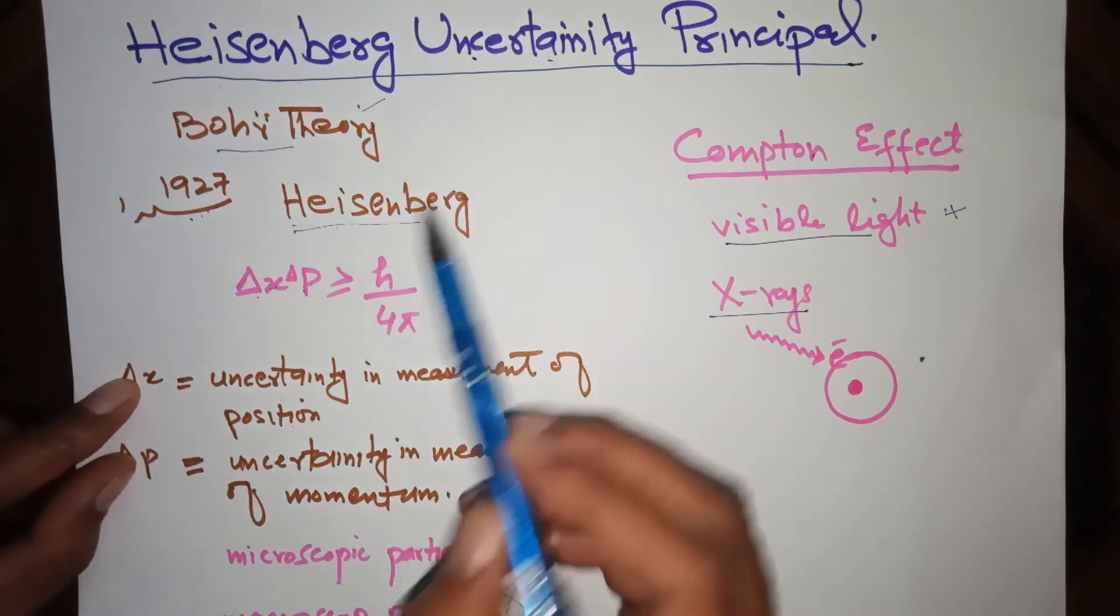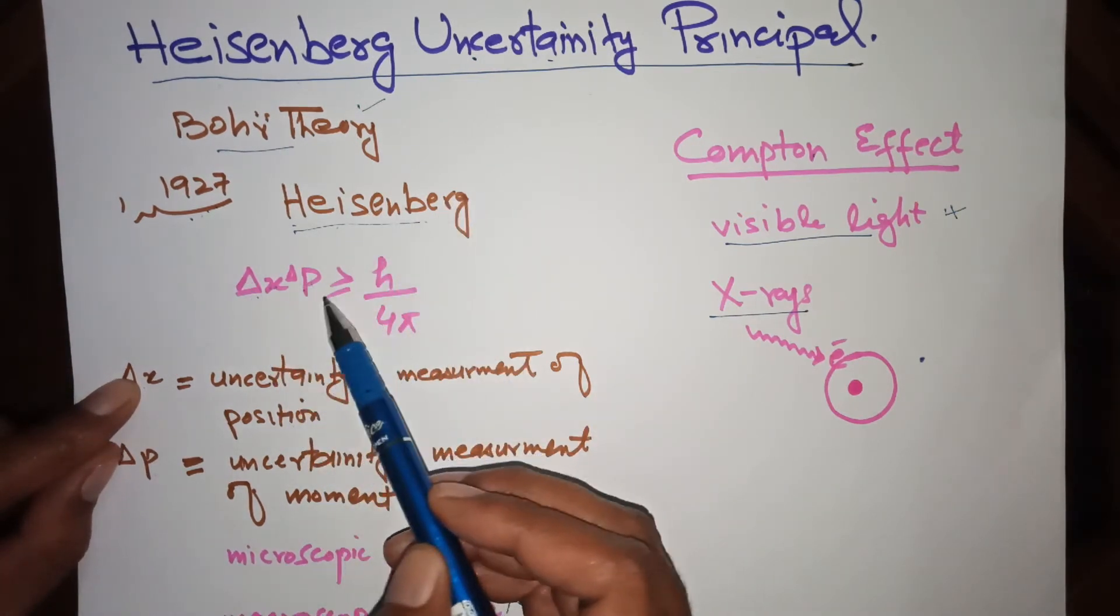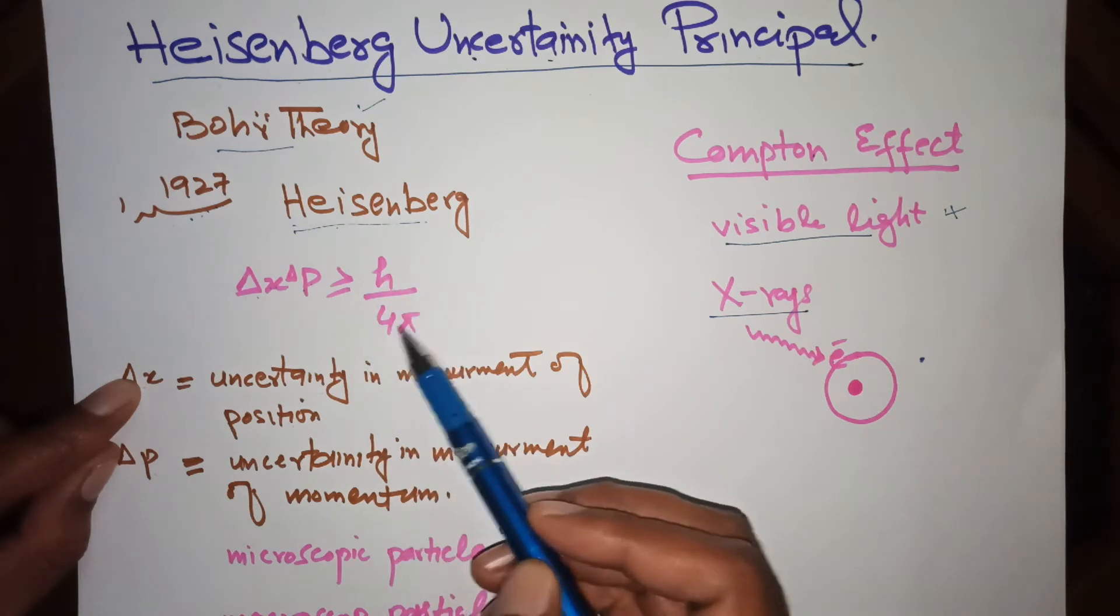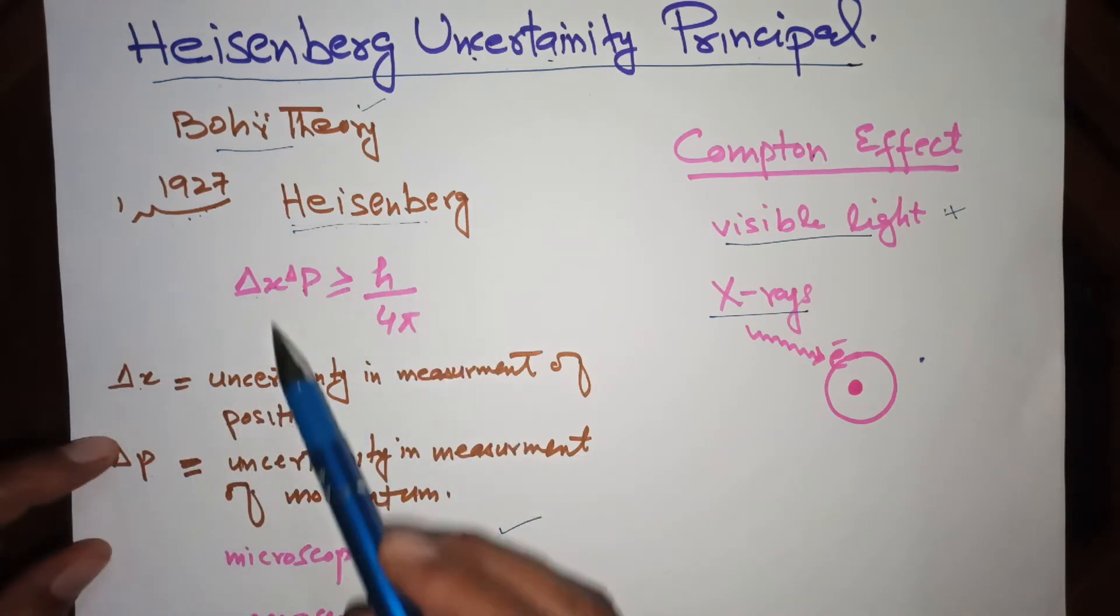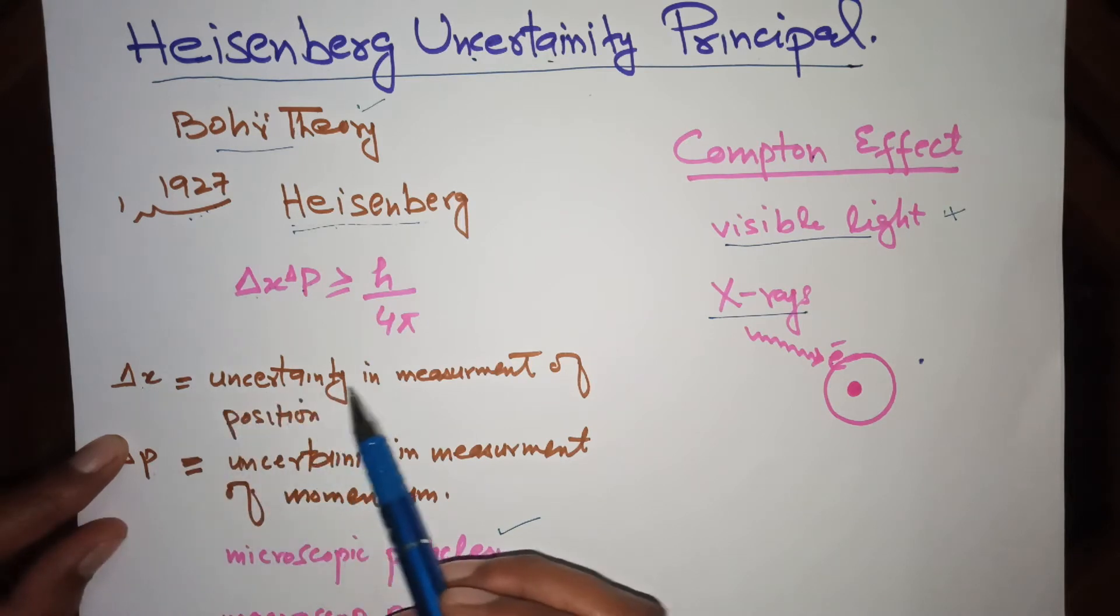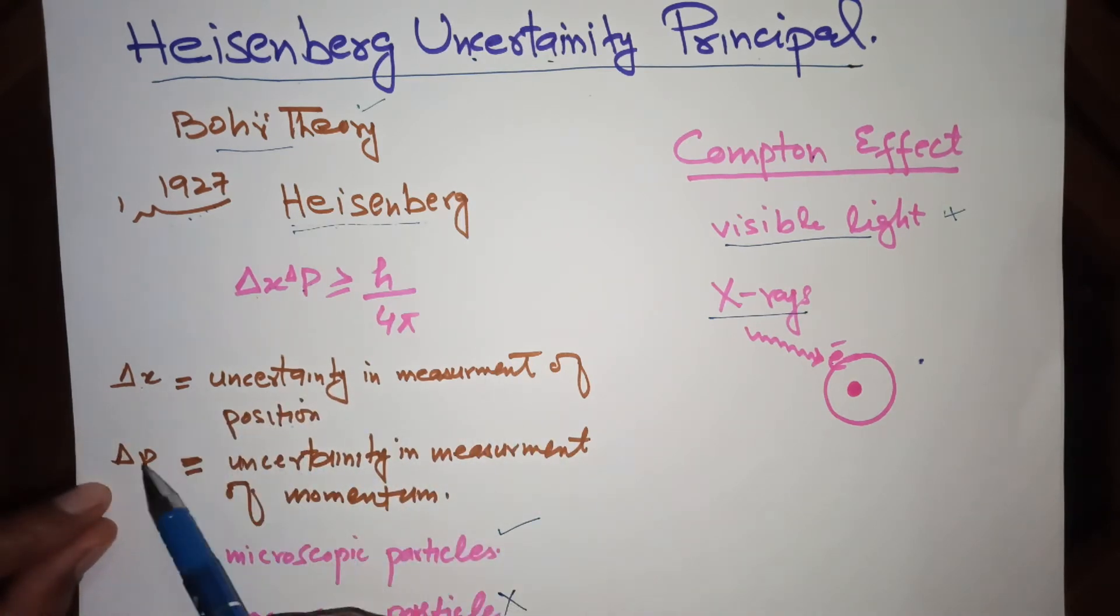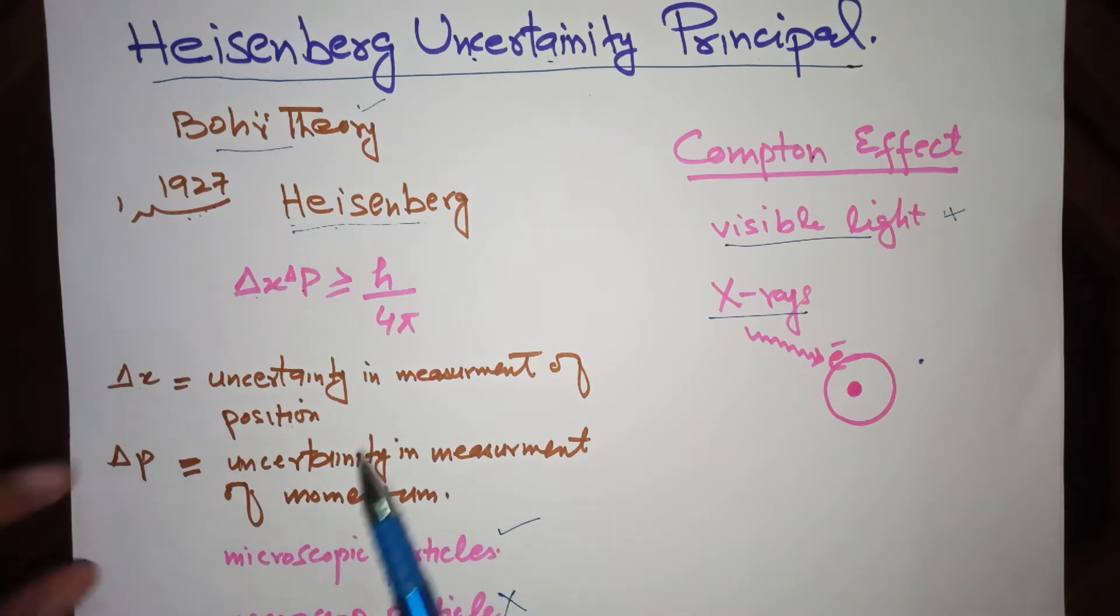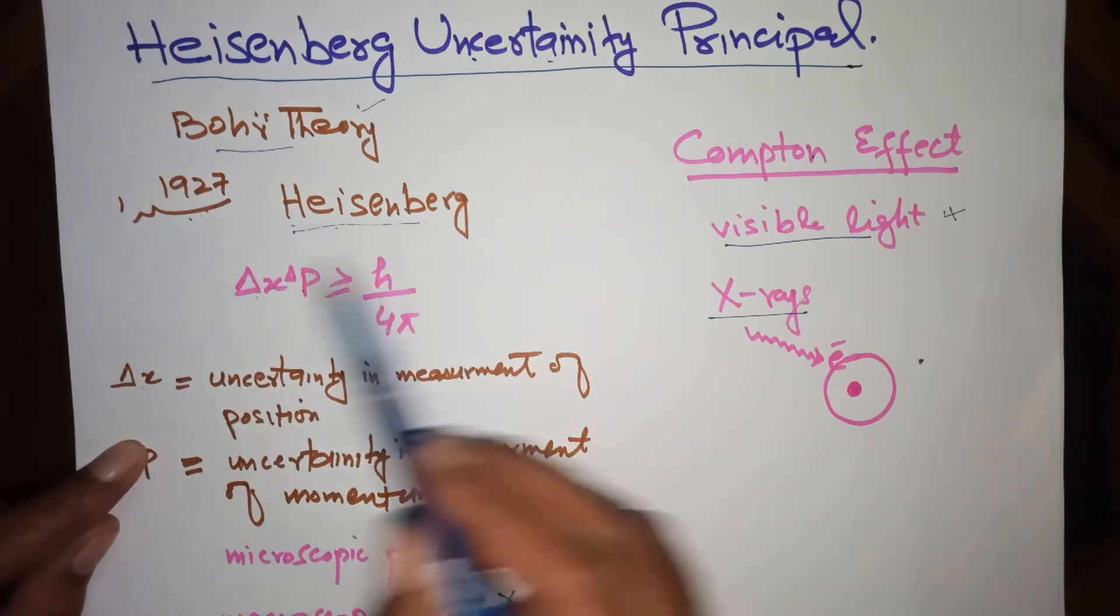Heisenberg gave the equation Δx·Δp ≥ h/4π. In this equation, Δx is the uncertainty in the measurement of position and Δp is the uncertainty in the measurement of momentum. So this is the uncertainty principle.